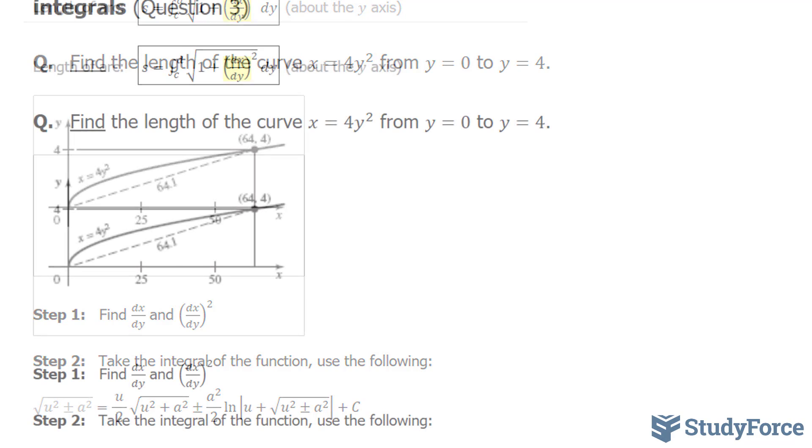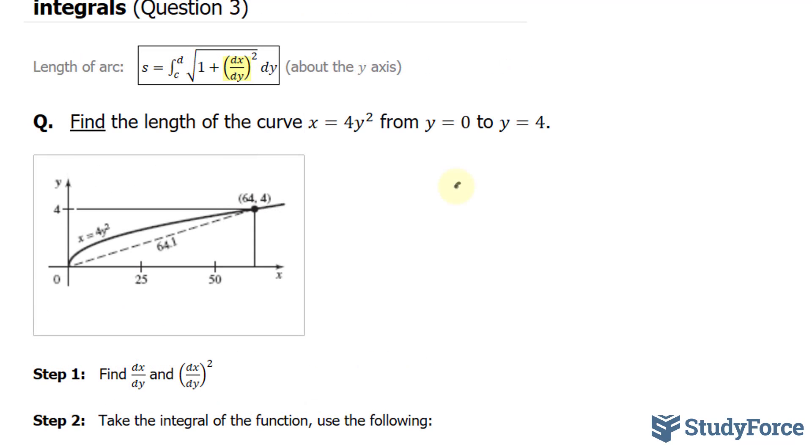Let's start with the first step, which is to find the derivative. We have x is equal to 4y squared. Now finding the derivative with respect to y, we get dx over dy is equal to—I'm going to use the power rule here—8y, 2 minus 1 is 1, and I'll substitute 8y into here.